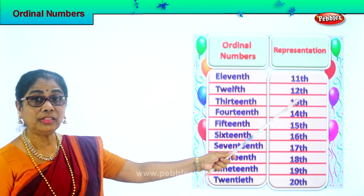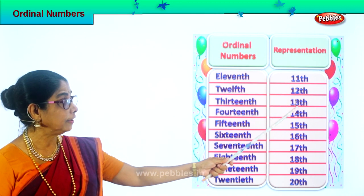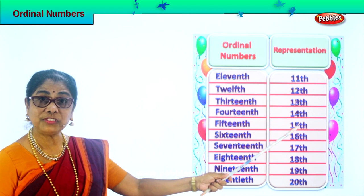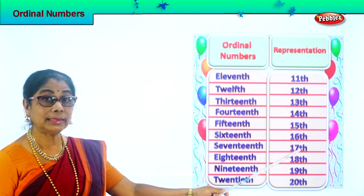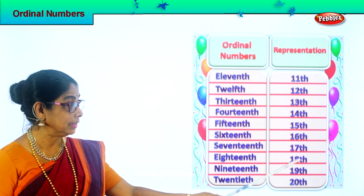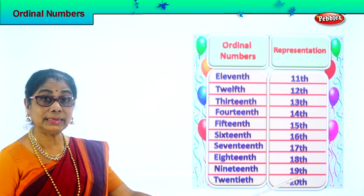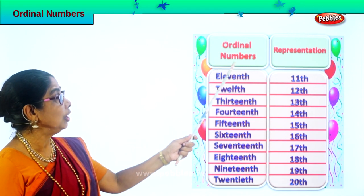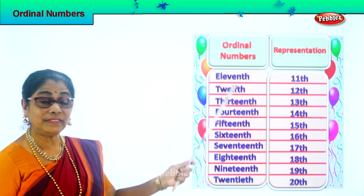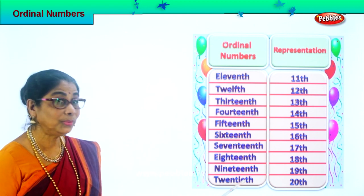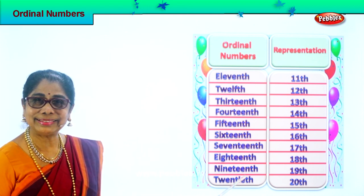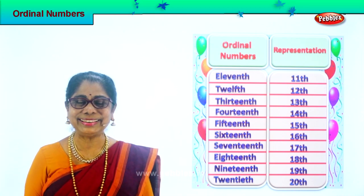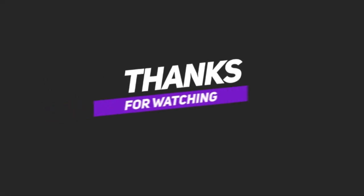Now let's read all the representations: 11th, 12th, 13th, 14th, 15th, 16th, 17th, 18th, 19th, and 20th. So we have ordinal numbers from 11th to 20th. Did you enjoy, children? Thank you.